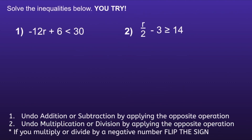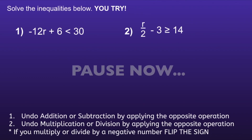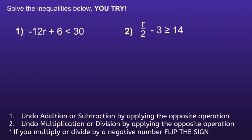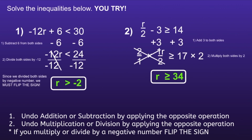I have two problems I want you to try. I would recommend you pause the video, solve, and then resume when you're ready to see if your solutions are correct. The final inequality for number 1 is r is greater than negative 2. Notice that we did divide by a negative number, so we did have to flip the sign in that problem. The final inequality for number 2 is r is greater than or equal to 34. If you had any of these incorrect, I would recommend you go back, review your work, and see if you can determine your mistake.